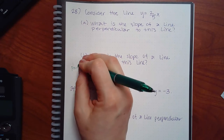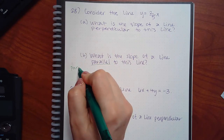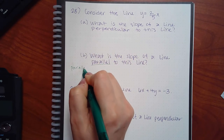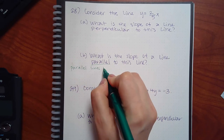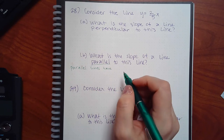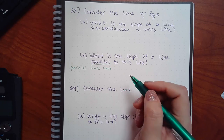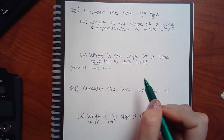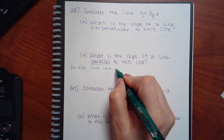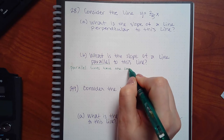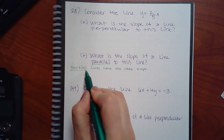I once got a 99 on my Algebra 2 final exam in high school because I spelled 'parallel' with two r's. The teacher said vocabulary is important — lesson learned. So: parallel lines have the same slope.